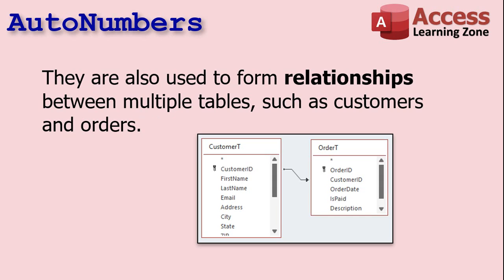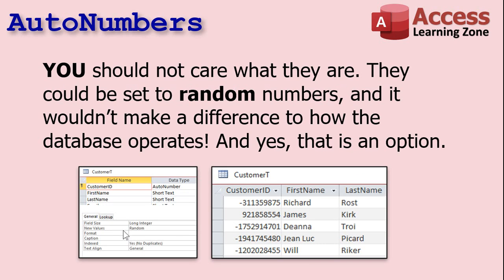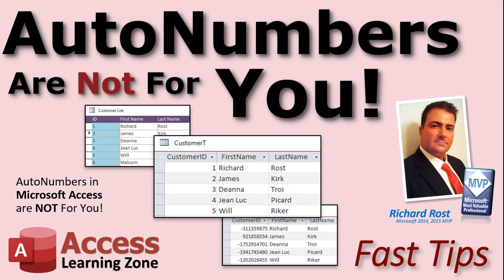Also very important is that auto numbers are used by Access to form relationships between multiple tables — such as customers and orders, students and what classes they're enrolled in, products and what vendor you buy them from. You, the user, should not care what these numbers are. They could be set to random numbers and it wouldn't make a difference to how the database operates. And yes, that's actually an option — you can set auto numbers to be random. The auto numbers are not for you. You shouldn't care whether it's 5, 6, 7, 2,000,004, or whatever. Access cares.